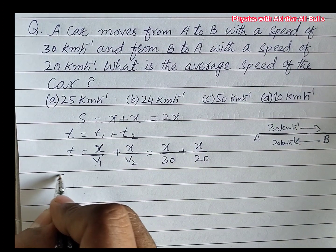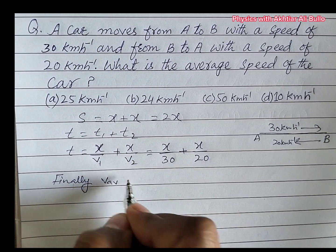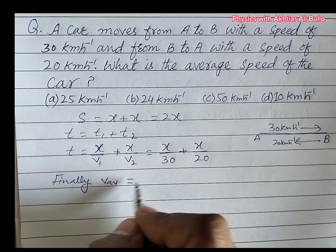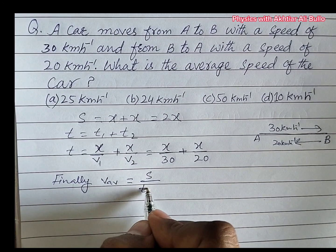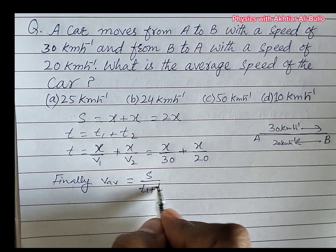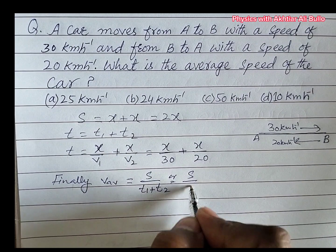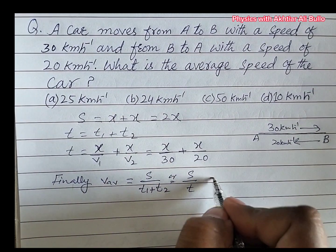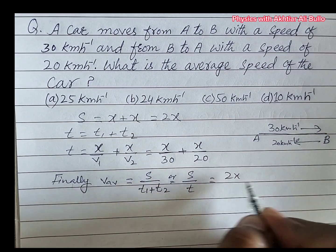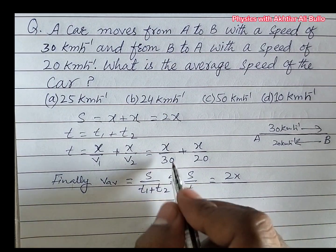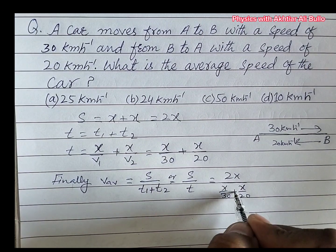Now, finally, we will calculate average speed. So average speed will be equal to S upon T1 plus T2. So S obtained is 2x, and total time obtained is x upon 30 plus x upon 20.